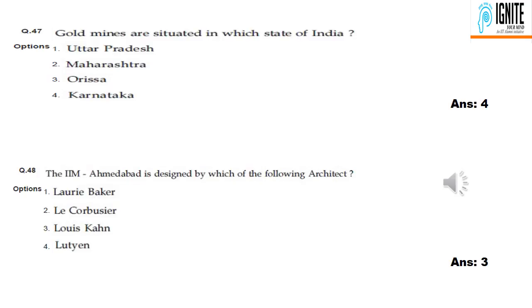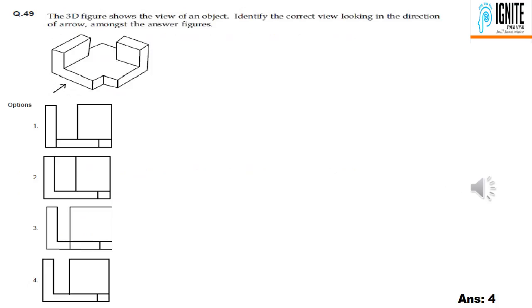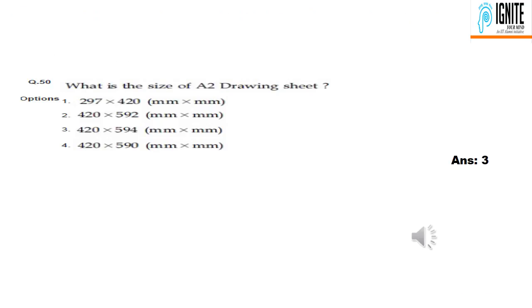Question 47: gold mines are situated in Karnataka — option 3. Question 48: the IIM Ahmedabad is designed by Louis Kahn — option 3. Question 49: front view — option 4. Question 50: A2 drawing sheet dimensions — option 3, which is 420 × 594 mm.